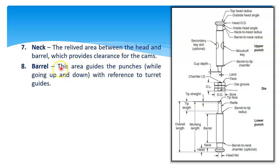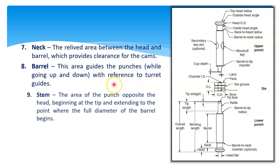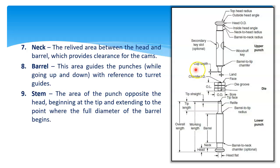Then neck of punch — this portion is called the neck of the punch. It is the relieved area between the head and barrel which provides clearance for cams. Then barrel of punch — this is the barrel of upper punch and barrel of lower punch. This area guides punches while going up and down with reference to the turret guides. Then stem — this portion is called the stem, the area of punch opposite to the head, beginning at the tip and extending to the point where the full diameter of the barrel begins.